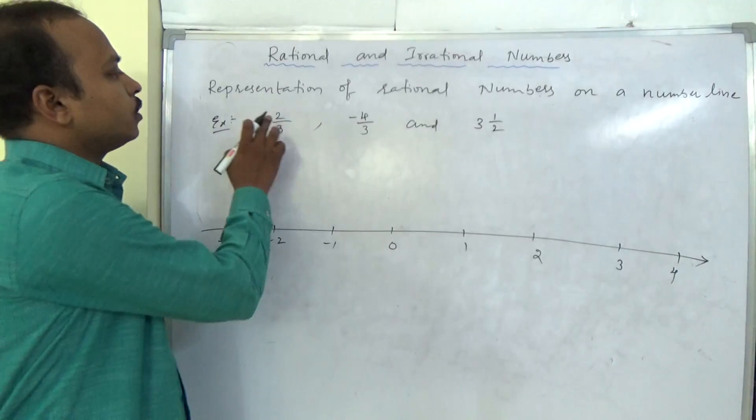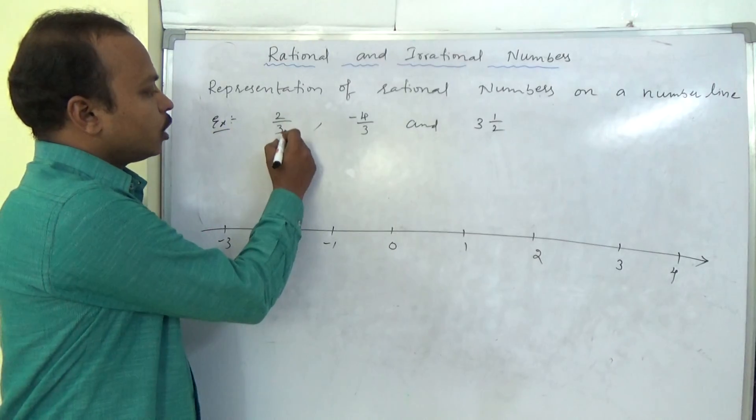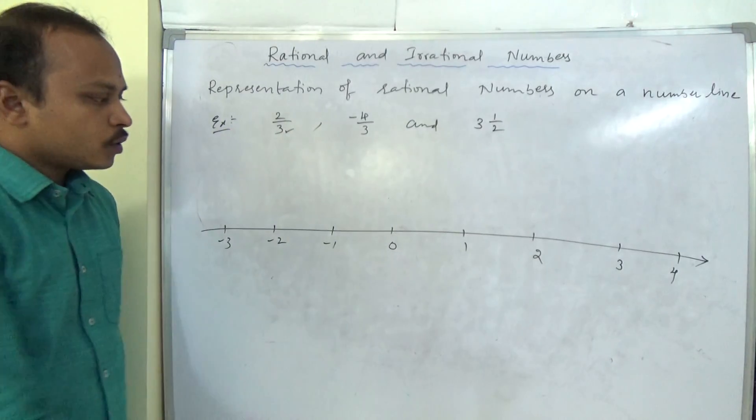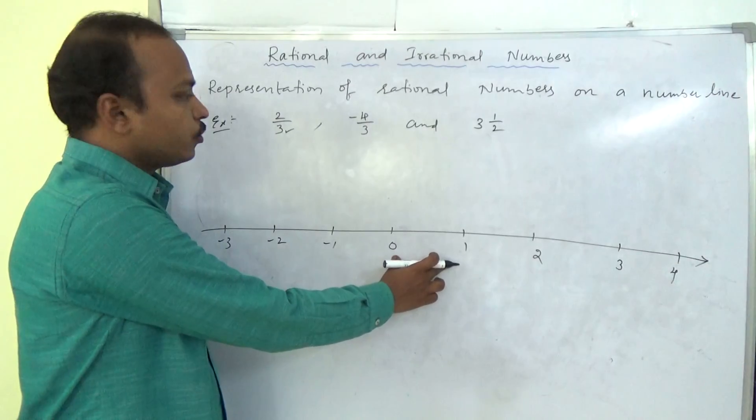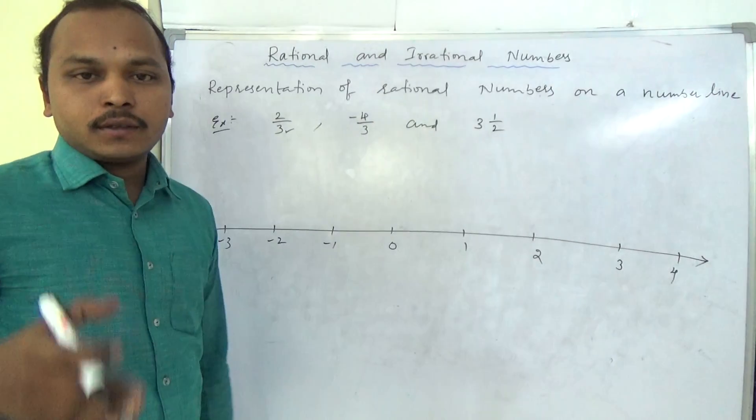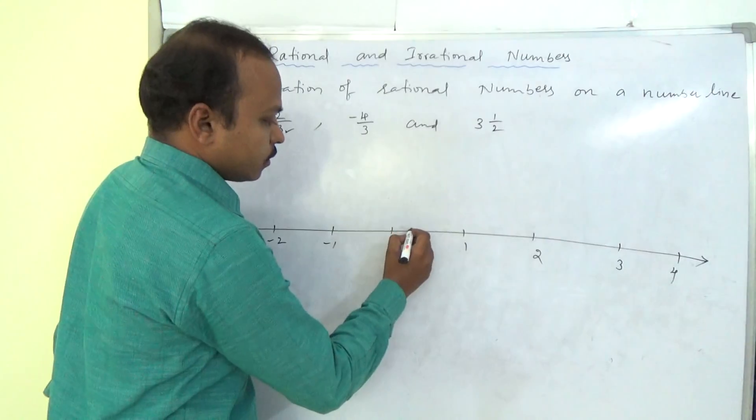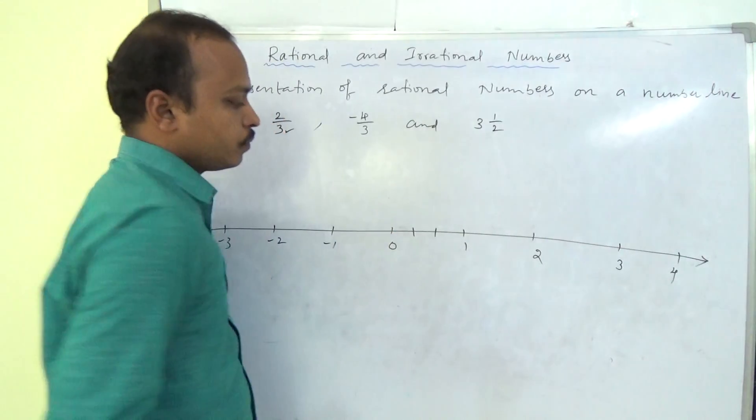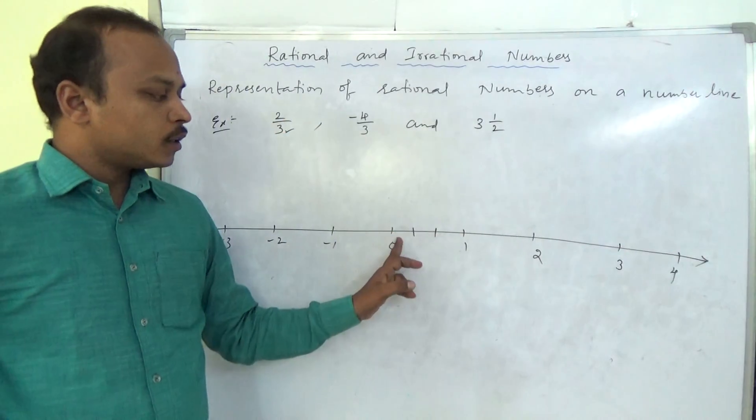What we should do? 2 by 3. Here, denominator is 3. So between 0 and 1, you should make 3 equal parts. 1, 2. 2 lines if you make, 3 parts will come.